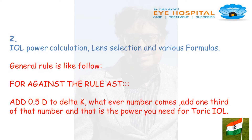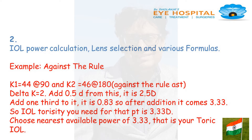For against-the-rule astigmatism, add half a diopter to delta K; whatever number comes, add one third of that number, and that is the power you need for the toric IOL. Example: K1 is 44 at 90 and K2 is 46 at 180 degrees — against-the-rule astigmatism, delta K is 2. Add half a diopter: it is 2.5D. Add one third: it comes to 0.83. So after addition it comes to 3.33D. Choose the nearest available power of 3.33 — that is your toric IOL.